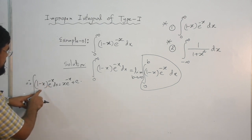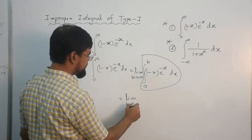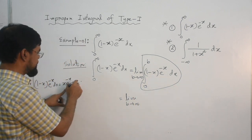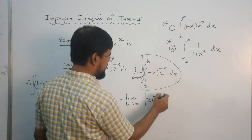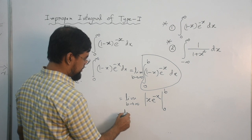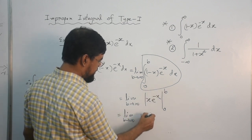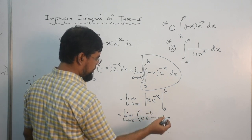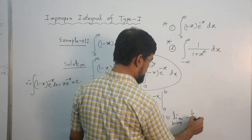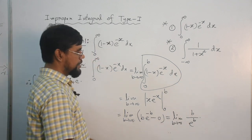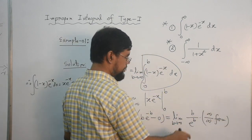So this integral, the indefinite one, is xe^(-x) + C. Therefore I can put this result back. We have limit as B tends to infinity of [xe^(-x)] from 0 to B. This equals limit as B tends to infinity of: putting the upper limit B gives Be^(-B), and putting the lower limit 0 gives 0. So this equals limit as B tends to infinity of B divided by e^B. Now if you put infinity for B, it gives an infinity over infinity form. Therefore you should not directly substitute infinity.